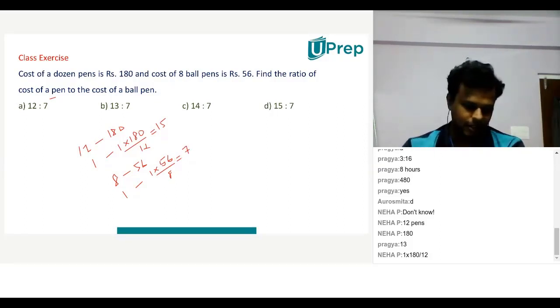So one pen will be 1 into 56 by 8. That is equal to 7. So children, the answer is 15 is to 7. Now is it clear?